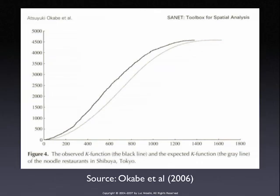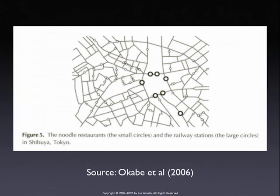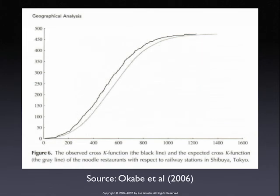Another interesting example: noodle restaurants relative to railway stations. Are the noodle restaurants closer to railway stations than they would be randomly, or further away? That's an example of the cross-K-function on a network. We have the pattern for the noodles and the pattern for the stations, connect the two, and the observed cross-K-function — using distances along the street network of Tokyo — is above the theoretical value, suggesting clustering around railway stations.